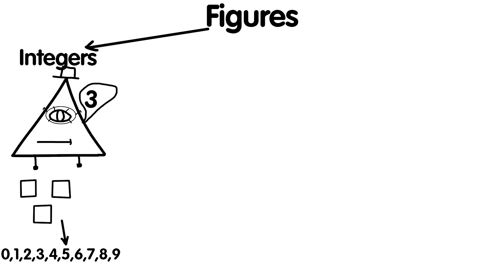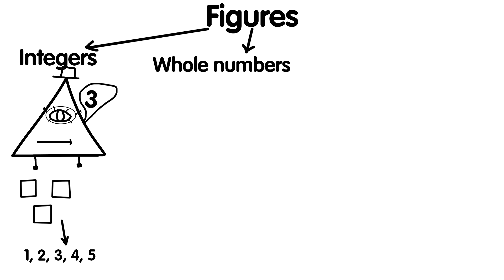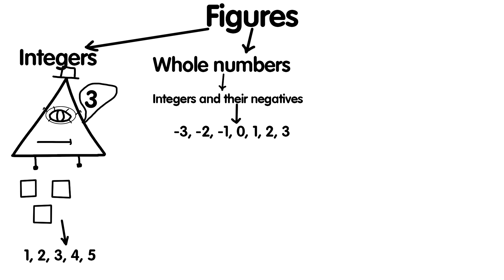Numbers come in different types. Natural numbers are numbers that are used to count objects and begin with 1: 1, 2, 3, 4, 5. Integer numbers are all natural numbers as well as their negative inverse and 0: minus 3, minus 2, minus 1, 0, 1, 2, 3.